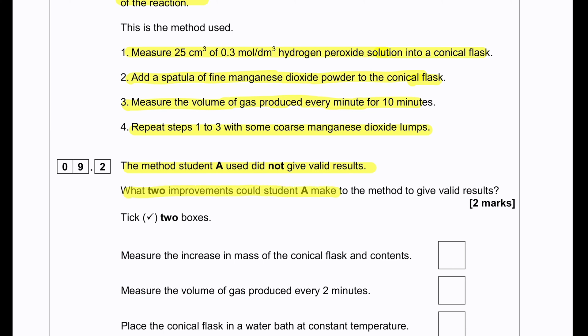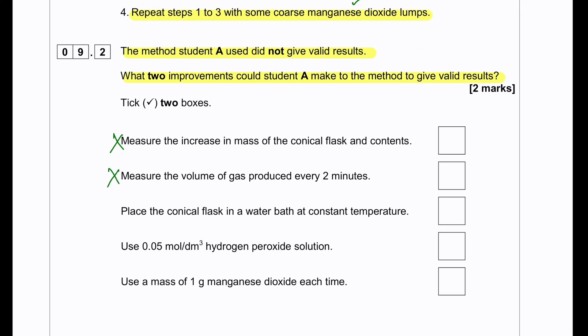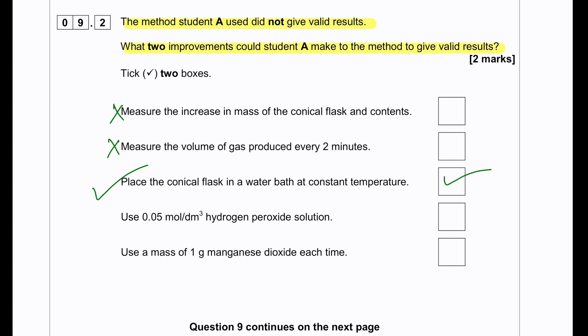Which two improvements could student A make to the method to give valid results? First, place the conical flask in a water bath at constant temperature. This will give a valid result because the temperature will be constant in every experiment. As the temperature stays constant, the rate of reaction will be affected only by the manganese dioxide lump sizes. Second, use a fixed mass, like 1 gram of manganese dioxide each time. Since you are using a fixed concentration of hydrogen peroxide in every experiment, using a fixed mass of manganese dioxide each time will give a valid result.